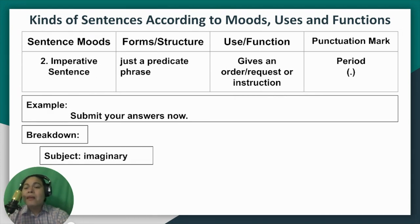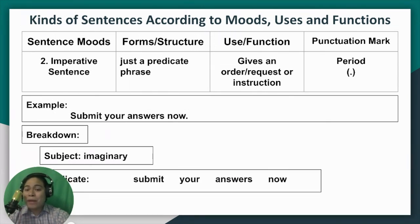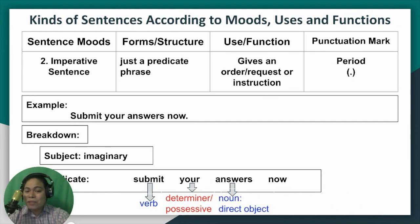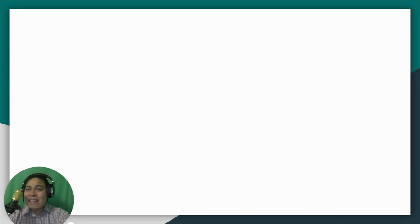Let's have the example: "Submit your answers now." The subject is imaginary — since you are being commanded or given instruction, "you" is the implied recipient, but it is not written. The entire sentence is the predicate. "Submit" is the verb. "Your" is a possessive determiner. "Answers" is a direct object — a noun answering the question what is to be submitted. "Now" is an adverb of time. Together, "your answers now" forms an objective phrase answering the question "what?"